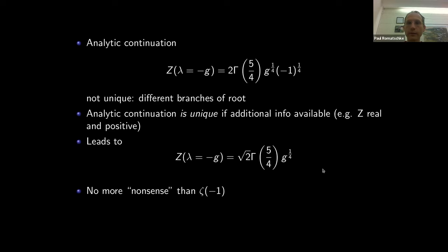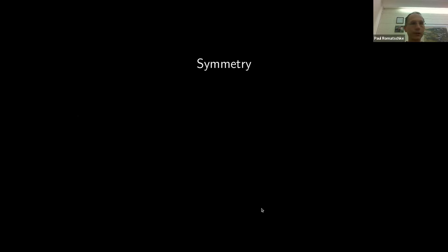To give a different argument for why classically unstable potentials can lead to well-defined quantum theories, consider symmetry. In standard quantum mechanics, we require observables to be Hermitian — the Hamiltonian equals its Hermitian conjugate. We know Hermiticity is sufficient for a real and positive spectrum, but it may not be necessary. It could be sufficient but not necessary to have a real and positive ground state.